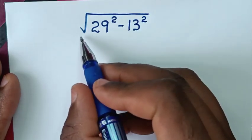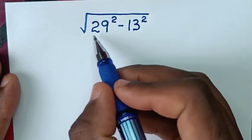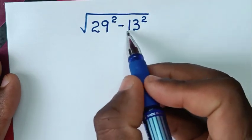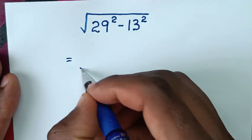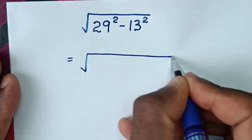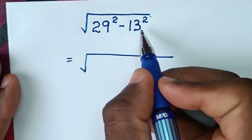Hello, you are welcome to solve this math problem which is square root of 29 square minus 13 square. It will be equal to square root from here. Under square root this is in the form of a perfect square.